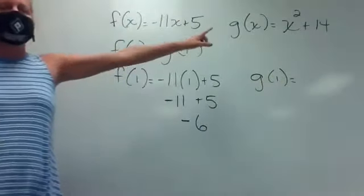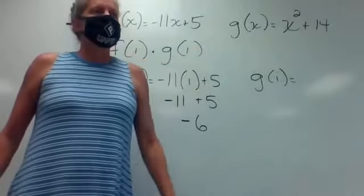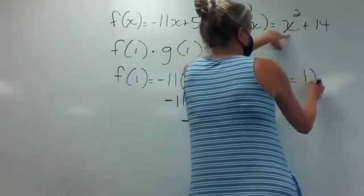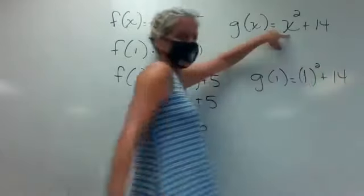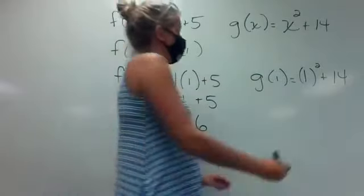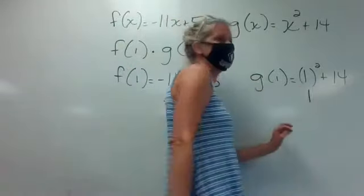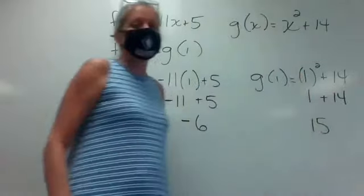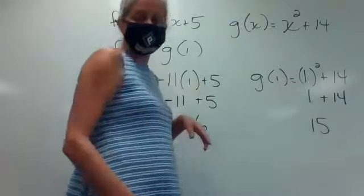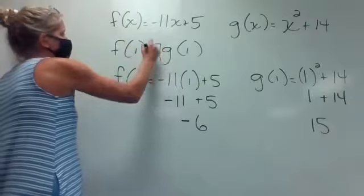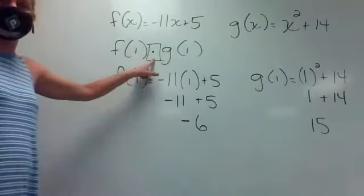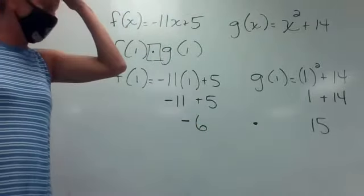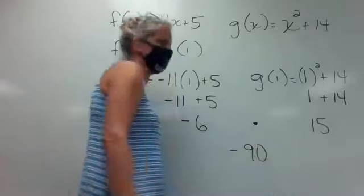Now I need to find g of one. I'm going to do the same thing — put the one into the g function in place of its x. So I'll have one squared plus 14. One squared is still one, bring down the plus 14, and one plus 14 gives me 15. Once you get the two solutions, backtrack to the original problem and look at what it tells you to do with them — this one says to multiply. So negative six times 15 gives me negative 90.